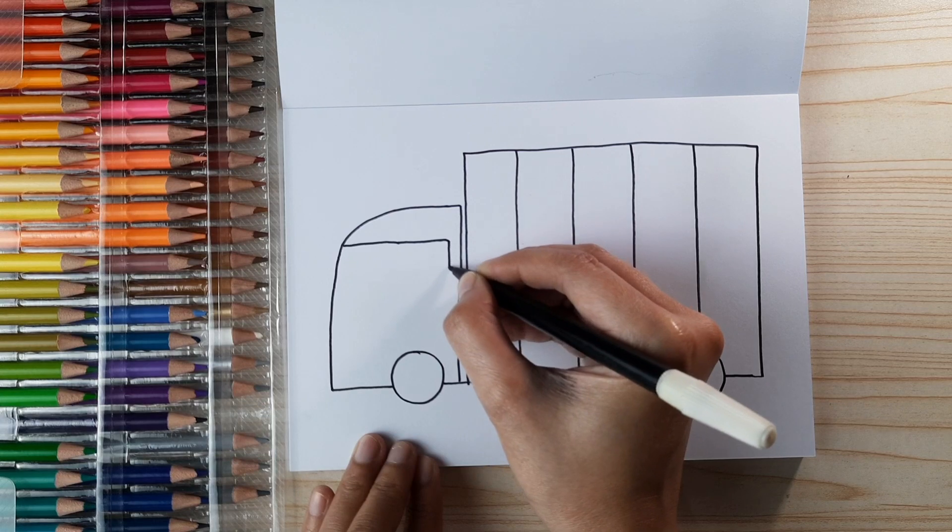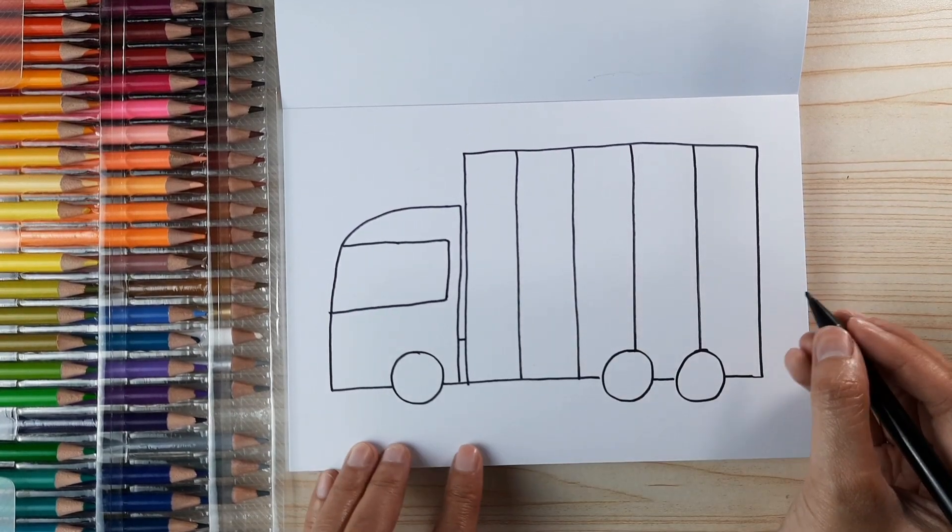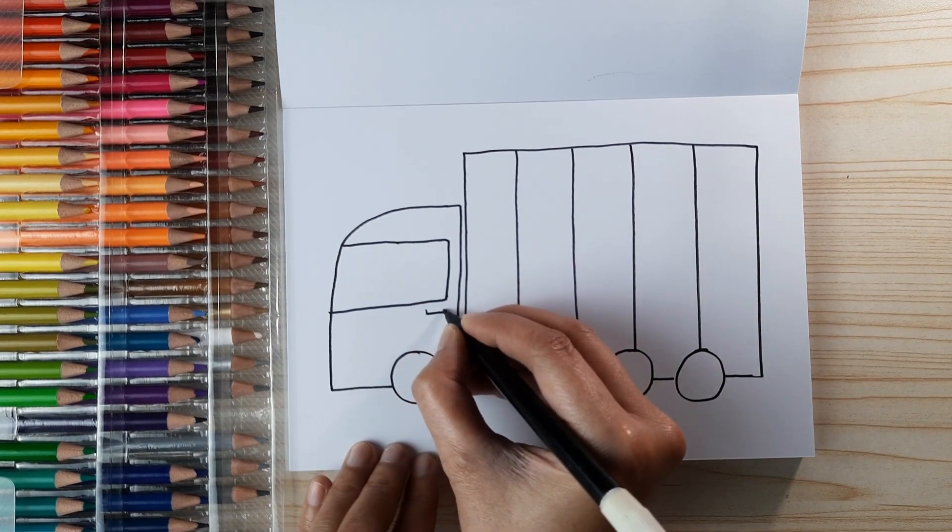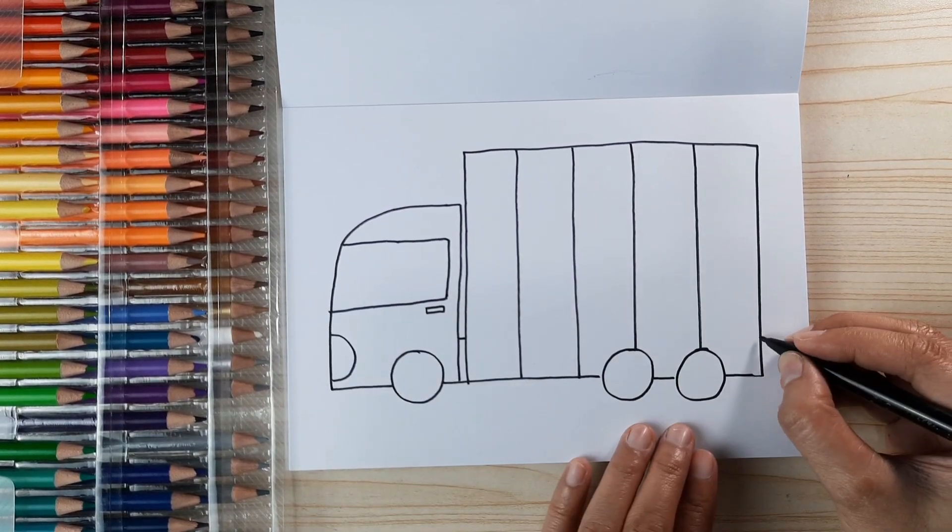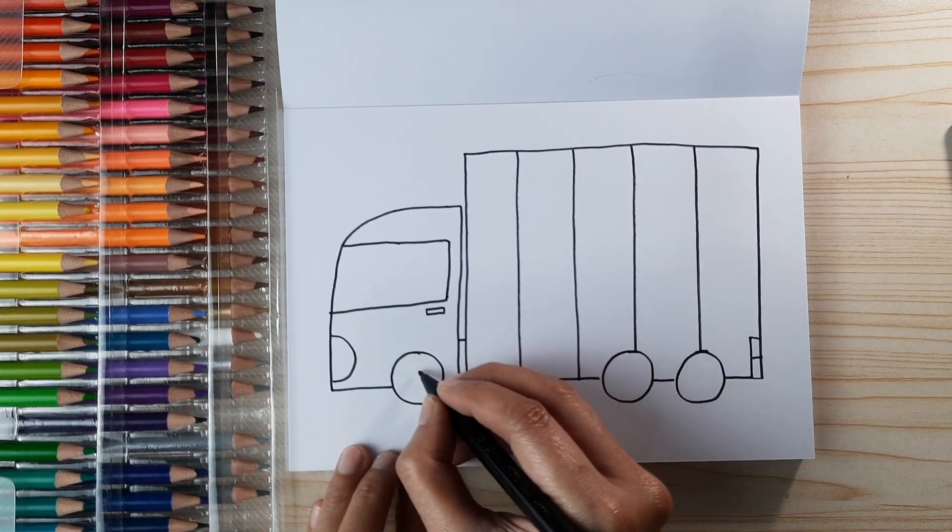For the front, just go to the right and go down and go back to the left. Don't forget to draw a small rectangle as the handle of the door and the light at the front and the back. Don't forget the little circle inside the wheels.